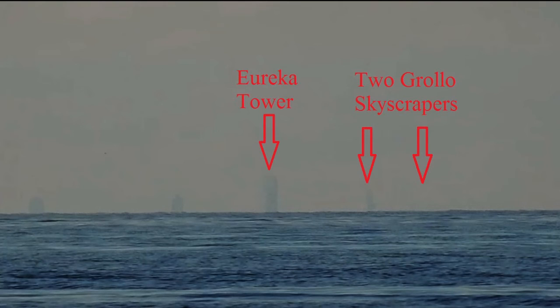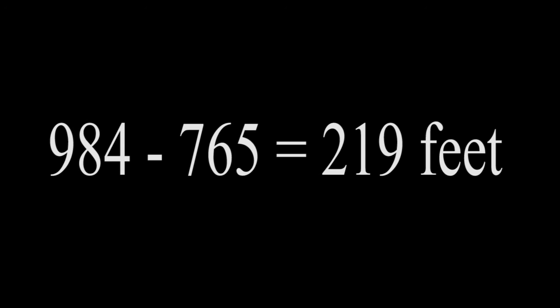Now we know that the Eureka Tower is 984 feet above sea level. Going by what that website calculates — 765 feet hidden — if we subtract 765 from the 984 feet, we get 219 feet.